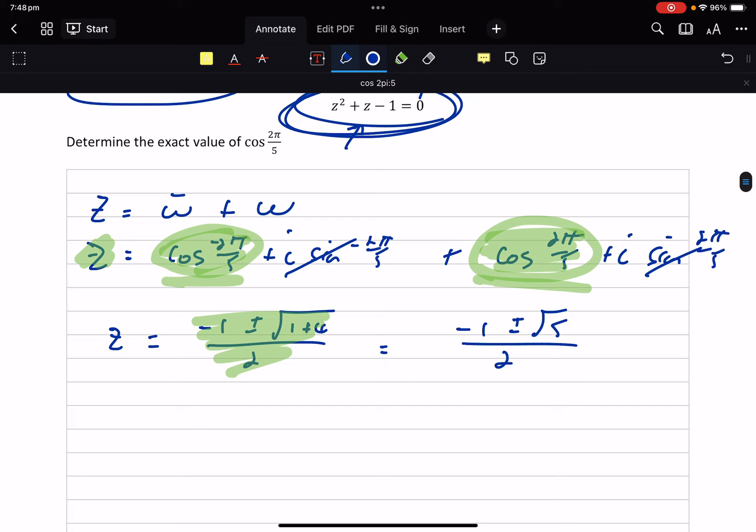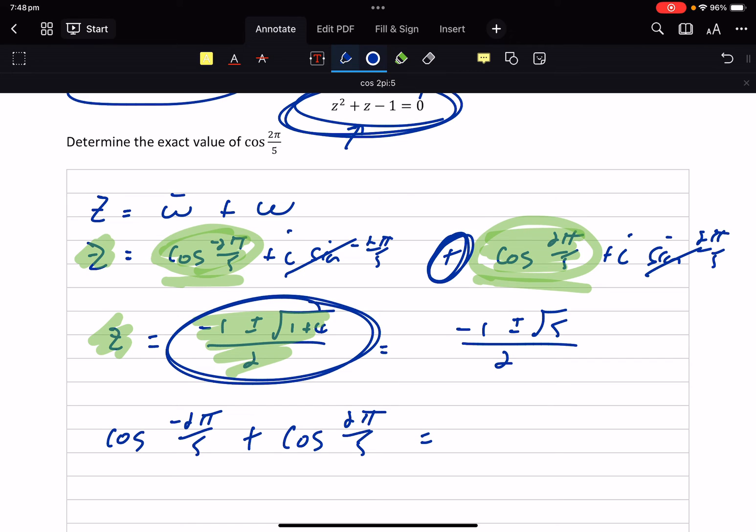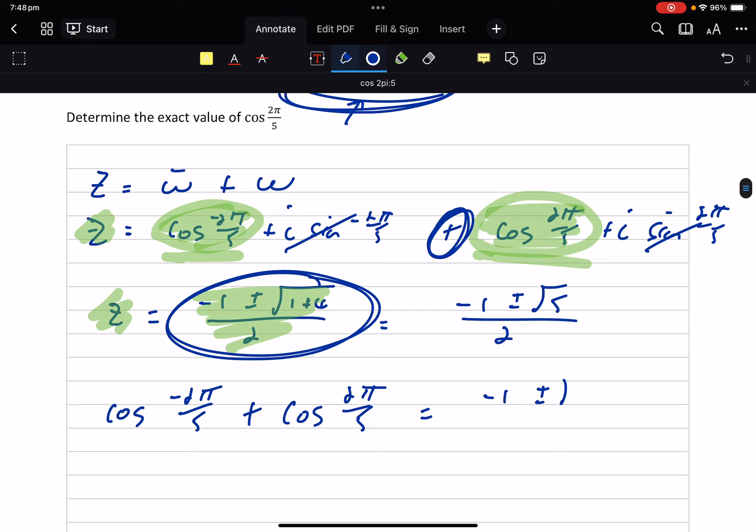So I can go, by equating, because z equals z, I can go cos minus 2π/5 plus cos 2π/5 will equal this thing here, minus 1 plus or minus root 5 on 2.